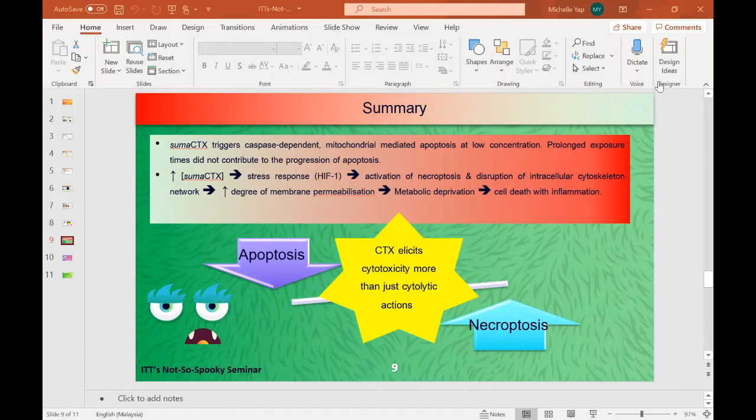Okay. And are there any other venom components that could be working synergistically with the cytotoxins? I would think the closest toxin component would be basic phospholipase A2 that could probably produce the same cytotoxic effects as the CTX.